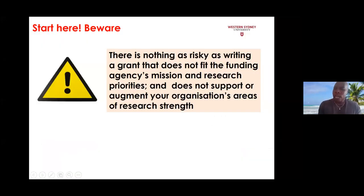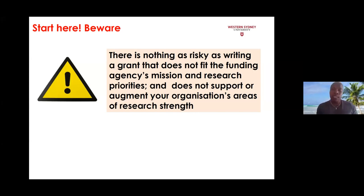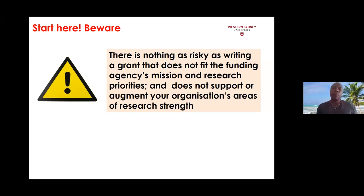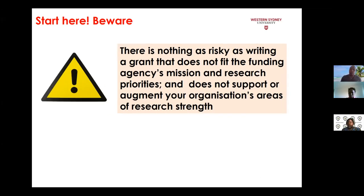Planning to write a grant is a challenge, and the biggest challenge is when you plan to write a grant without understanding your audience. When planning grants we have two audiences: the first is the agency providing the funding or advertising their research grants, and the second is your own employer. You need to ensure that whatever you put forward fits the funding agency's research priorities, but also that it can be supported by your organization's areas of research strength. If you fail to articulate your grant within these two parameters, your grant may not be competitive.